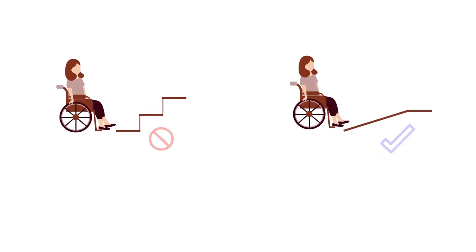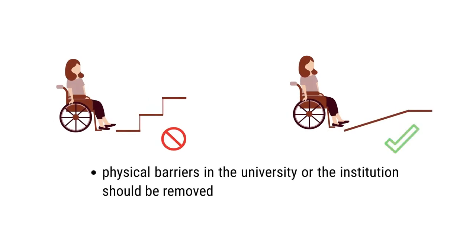The physical barriers in the university or the institution should be removed, so that learners with physical immobility or visual problems don't have any problem while moving inside the campus. All institutions should be barrier-free. There should be ramps, escalators, and different kinds of facilities for such learners so that they don't have any difficulty while moving inside the campus.